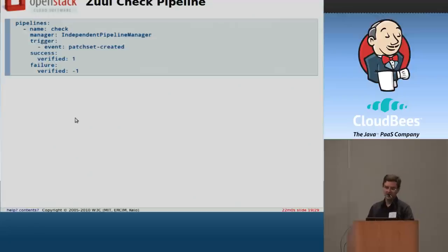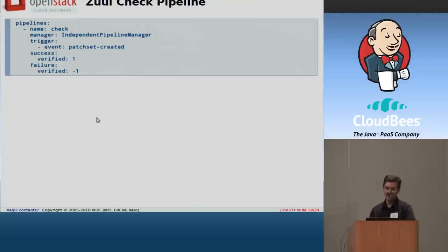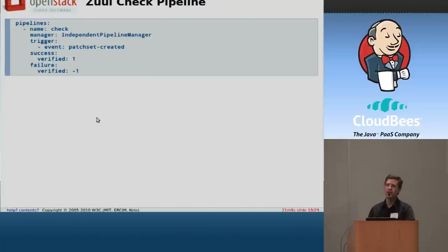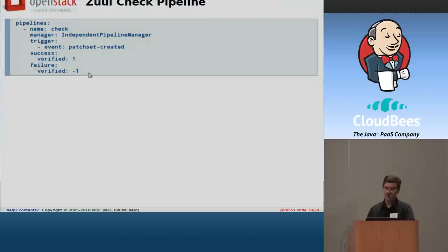Let me talk a little bit about how we configure Zuul. The configuration file is in YAML — we really like dealing with YAML because it's easy for us to read and easy for the computers to read. A basic concept in Zuul is the idea of a pipeline. We have a number of them: the check pipeline, the gate pipeline, the post pipeline, and so forth. The pipeline is something that watches for events in Gerrit, and when it sees them, it starts triggering jobs that have been associated with that pipeline.